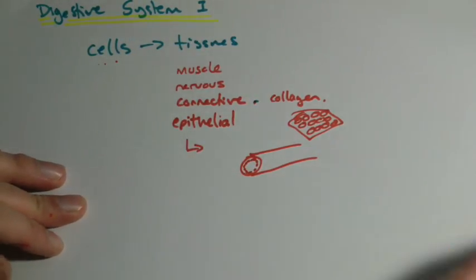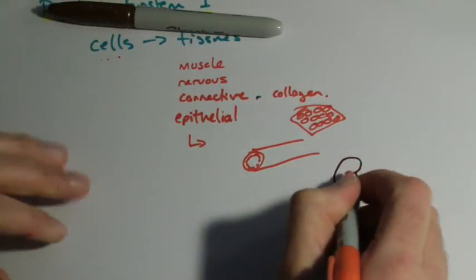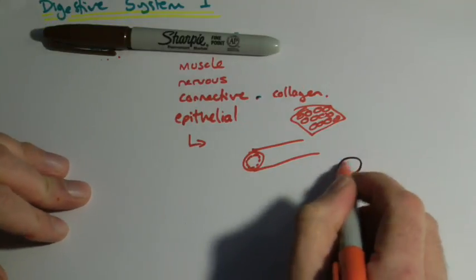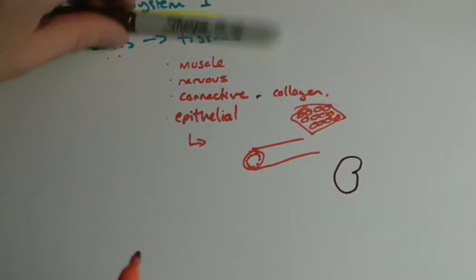If you take something like a kidney, there's loads of cells and bits and bobs going on the inside. But it's like it's got a covering, a coating, and that's epithelial tissue. So those are the four types.